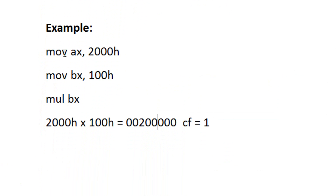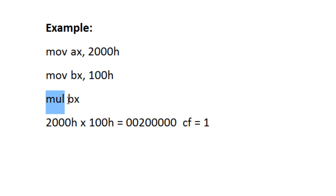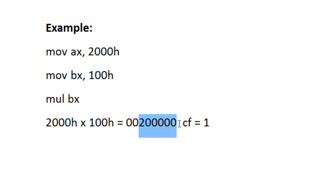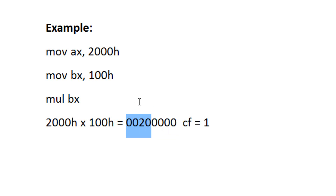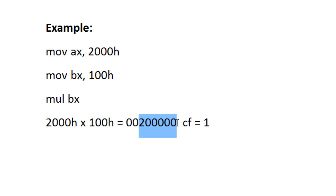Now let's look at a 16-bit version example. We're going to move into AX, 2000H, then move into BX, 100H. When we use the MUL instruction with a 16-bit operand, it automatically looks for whatever is in AX and multiplies it with the operand — in this case BX. So 2000H times 100H should be 200,000H. The carry flag would be set to 1 because the result exceeds four hex digits. The last four digits are stored in AX and the upper portion is shifted into DX.